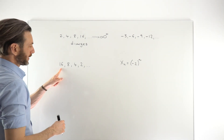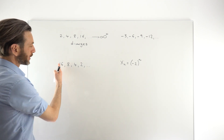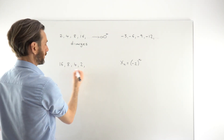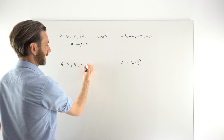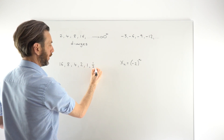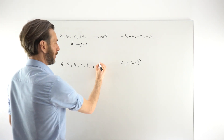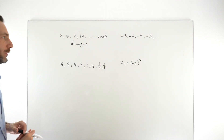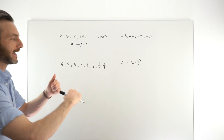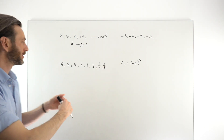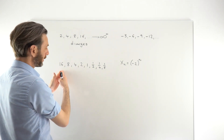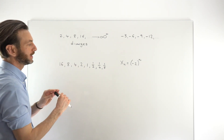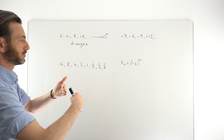This sequence: 16, 8, 4, 2 — we're dividing by 2 every time, halving the numbers. Let's write a few more terms: from 2, halving to get 1, then 1 half, then 1 quarter, then 1 eighth. So we're dividing by 2 every time. There's never a point where you're multiplying or dividing by a negative, so it can never flip past 0.